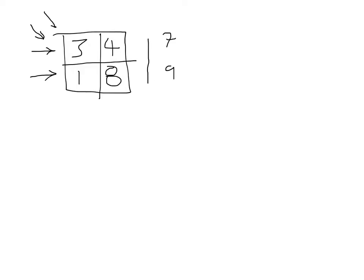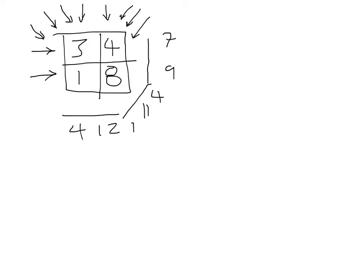After passing X-rays at 45 degrees, we get values of four, eleven, and one at the image receptor. Then we move another 45 degrees and pass X-rays through in that direction — four plus eight gives us twelve, and three plus one gives us four. Finally, we pass X-rays from one last angle and get values of three, five, and eight.